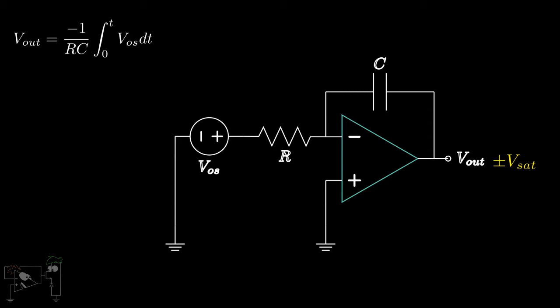This can also be seen from the frequency response of the circuit. We know that Vout by VN is 1 upon j omega RC. As the input offset voltage is a DC quantity, omega is equal to 0 and hence, we get infinite gain and the output saturates.